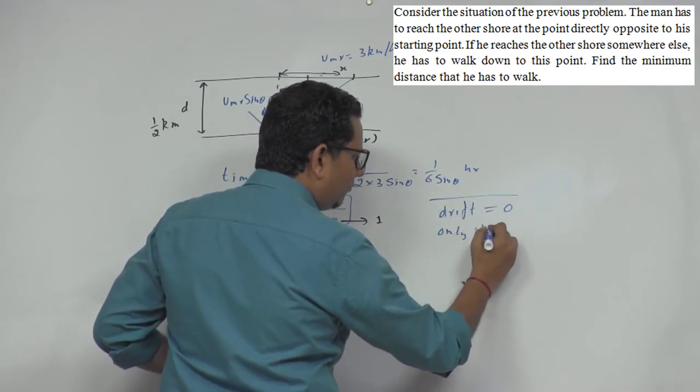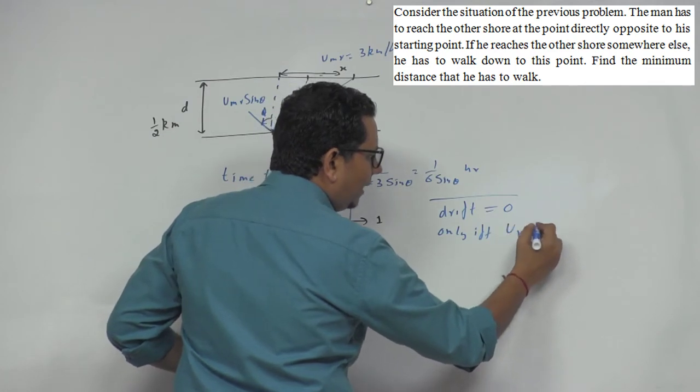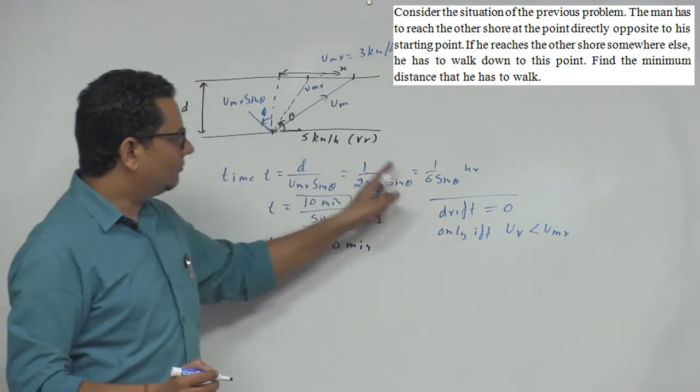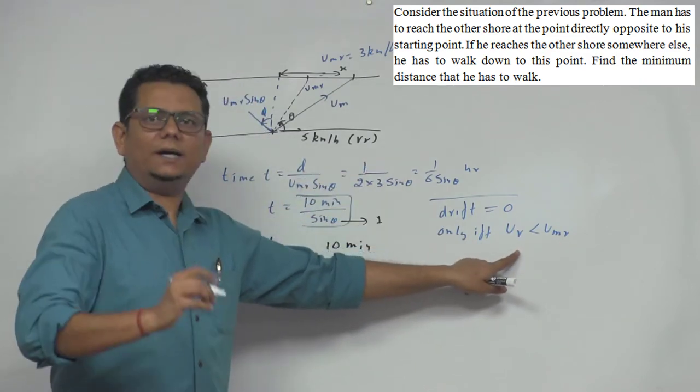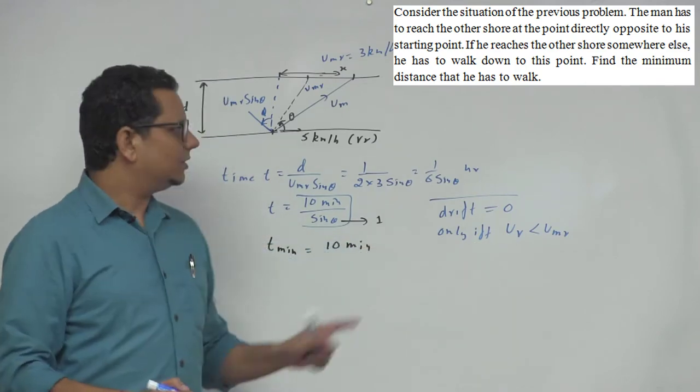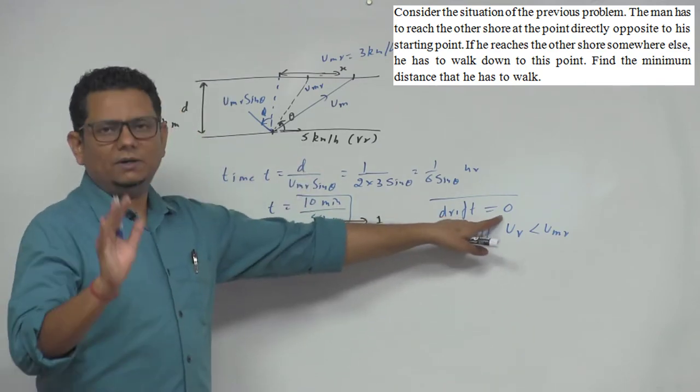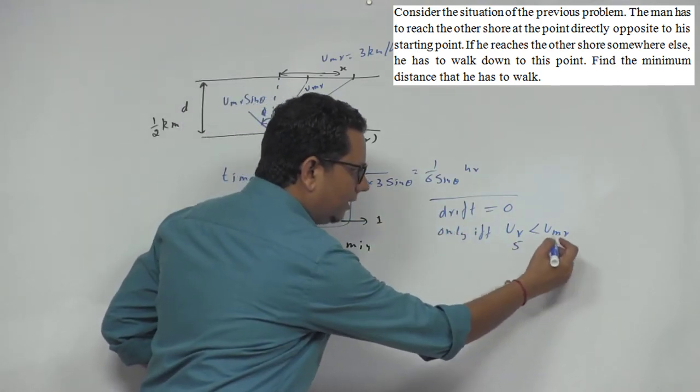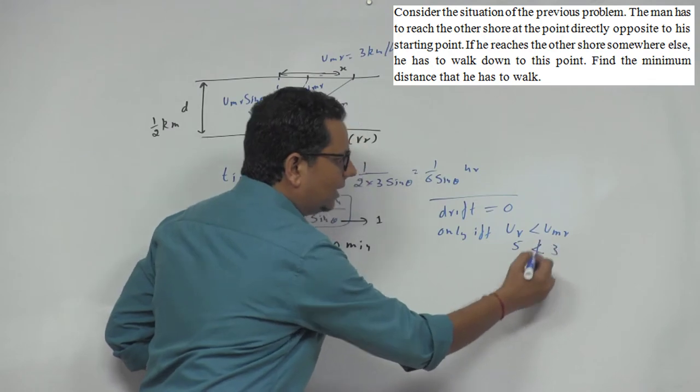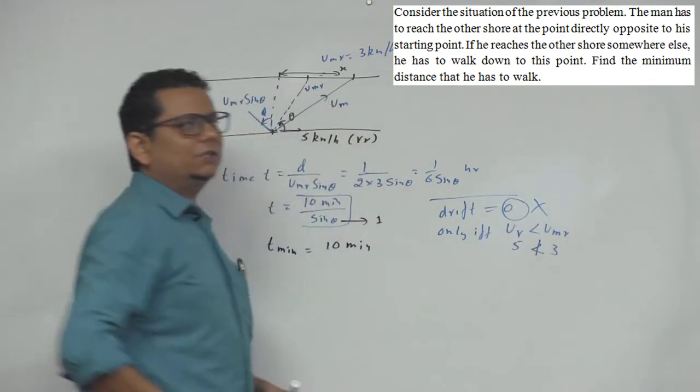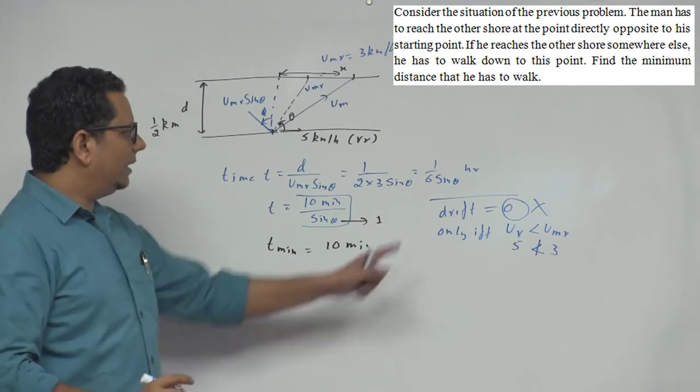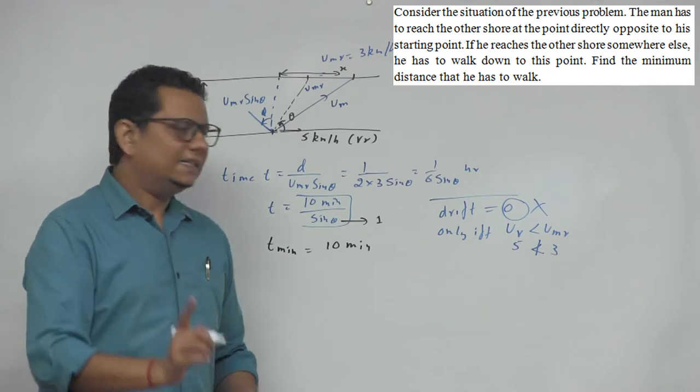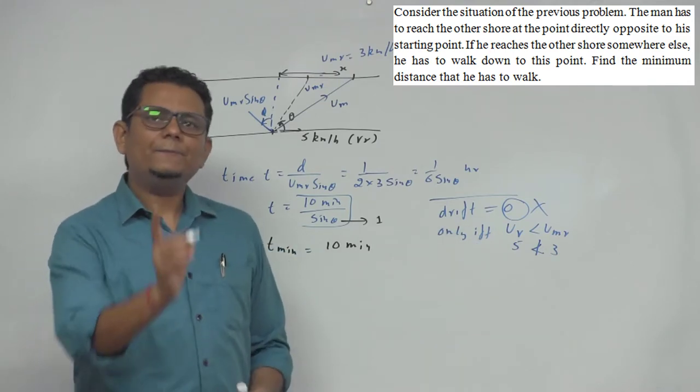Only if your VR is less than VMR. If the river speed is less than the man's speed, only then is minimum drift possible, which is zero drift. In this case, VR is 5 and VMR is 3, which is not less than. So here zero drift is not possible. Some students make a mistake here using the zero drift condition, but the answer doesn't come because zero drift is not possible.